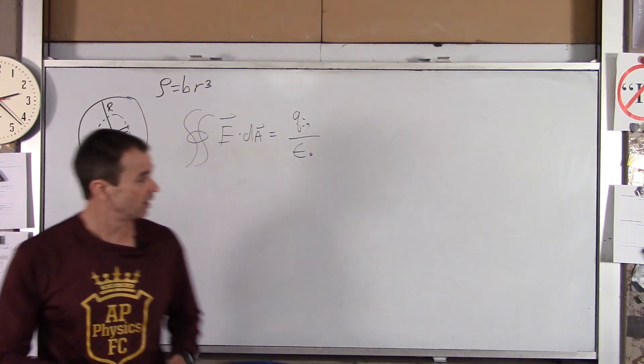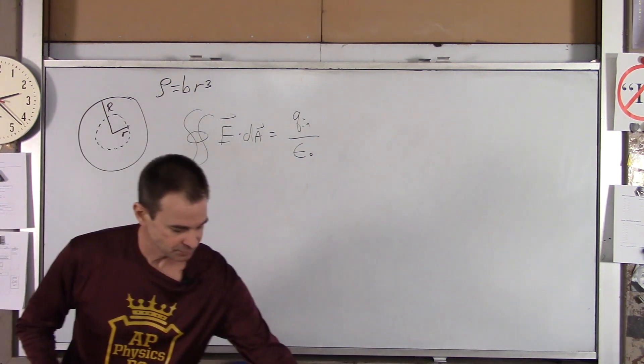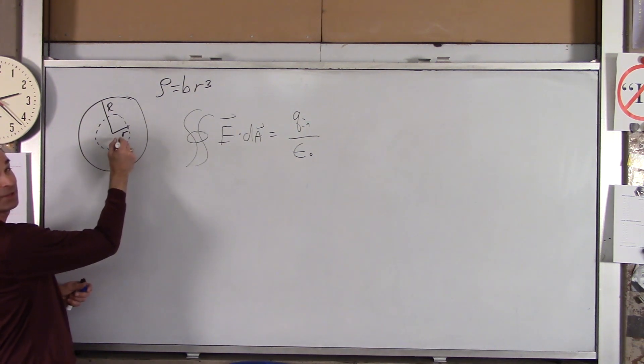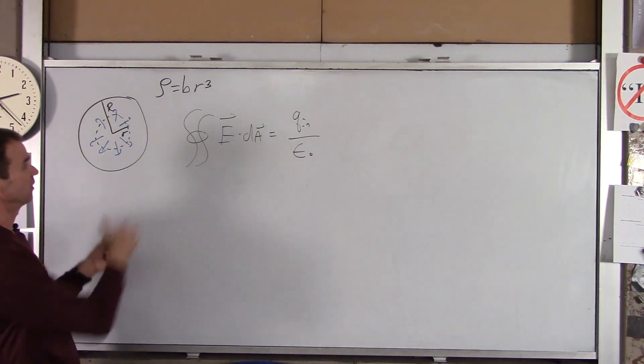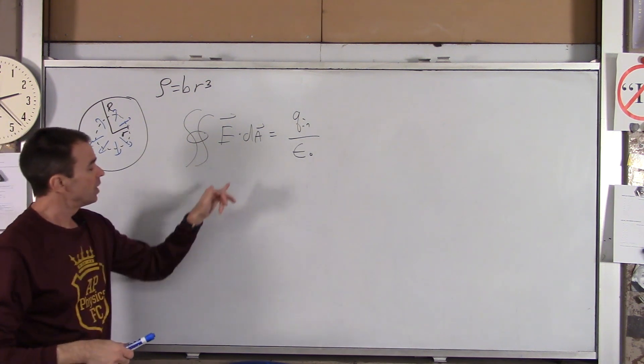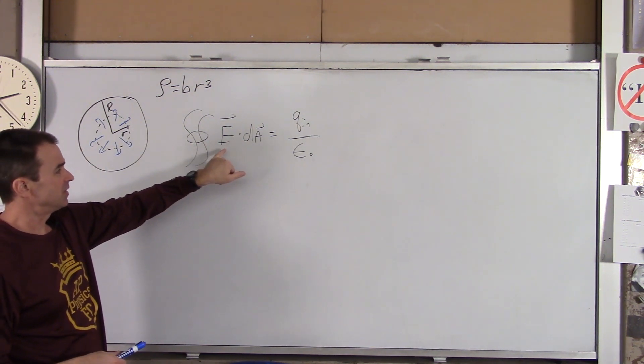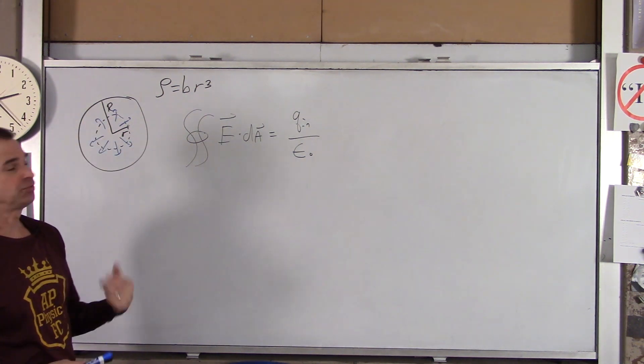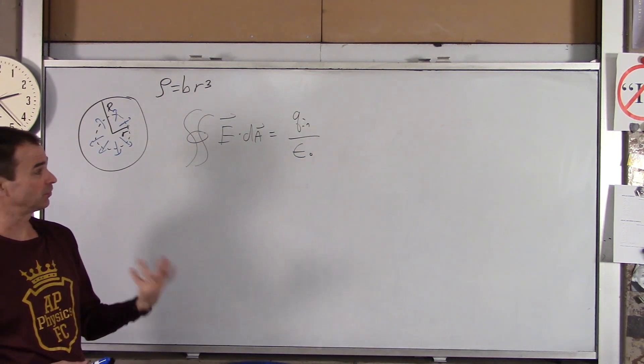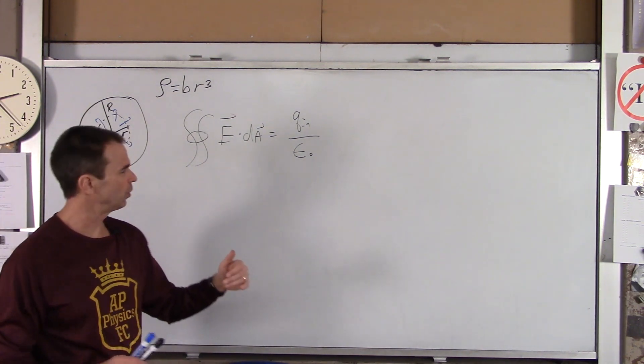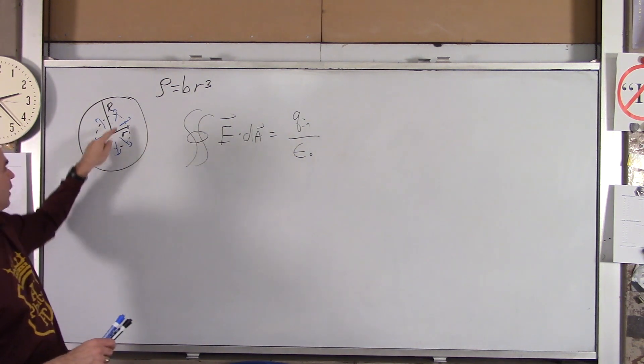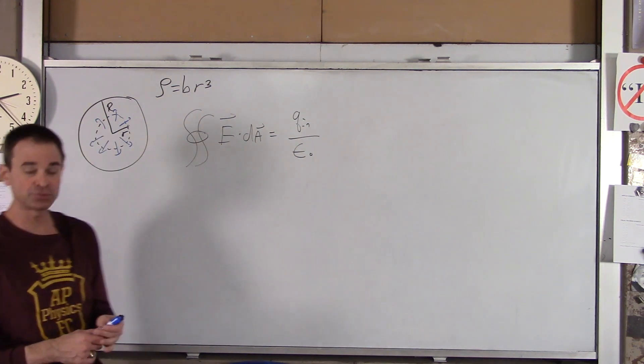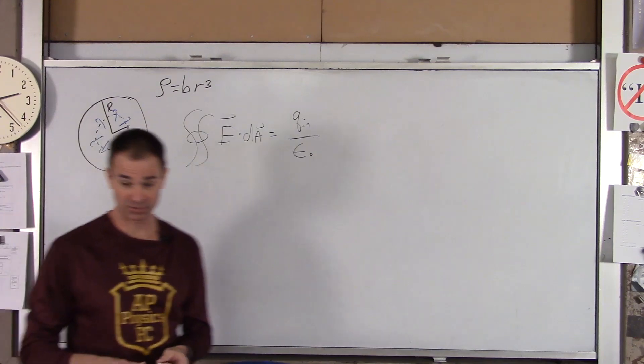So we start with Gauss's law, which is a closed surface area integral of E dot dA equals q_in over epsilon naught. Now having said that, for this fuzzy ball of charge, you've got electric fields, assuming it's positive, emanating outward. It'll be evenly distributed because this is even with the volume. So E dot dA will simply be E times the area, surface area of this little sphere. The surface area of this little sphere is 4 pi r squared. So the only hard part in this whole entire problem is finding q_in. How much charge have we captured inside that little sphere?